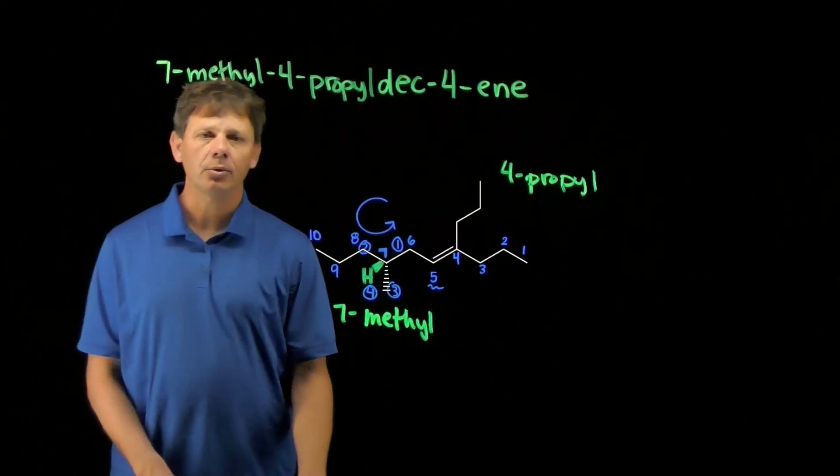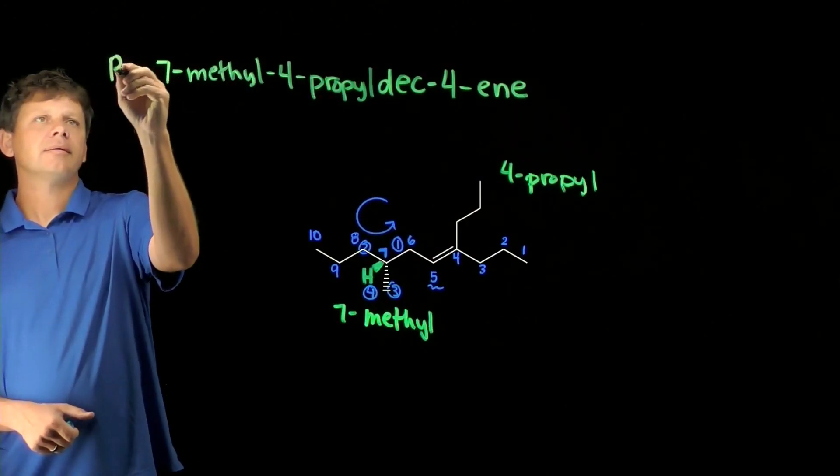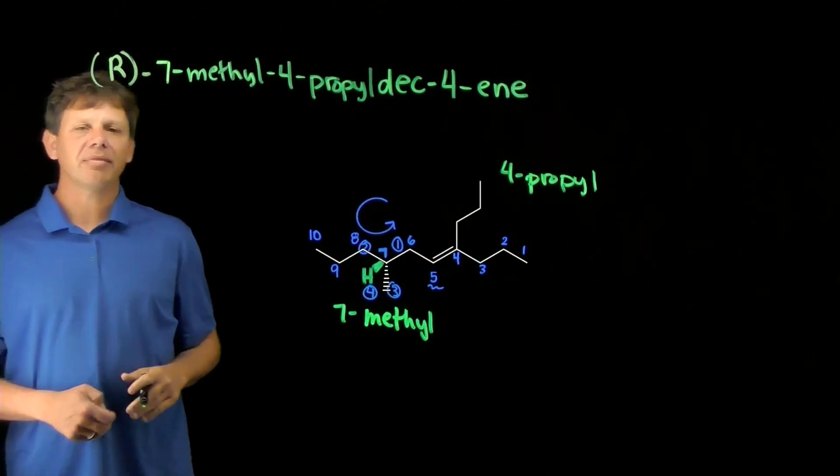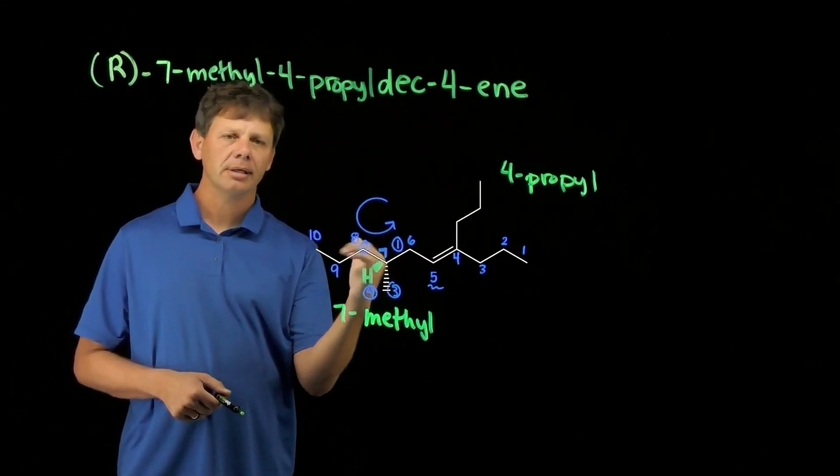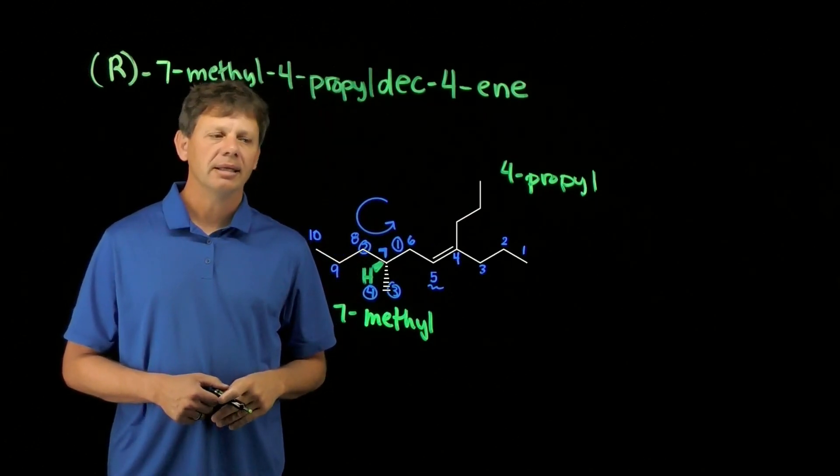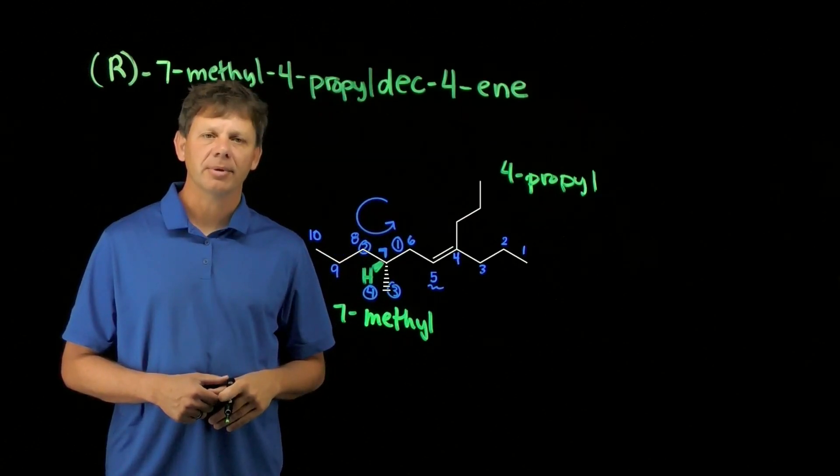So this molecule is (R)-7-methyl-4-propyl-dek-4-ene. Let me double check. One, two, three. It is in fact the R stereochemistry.